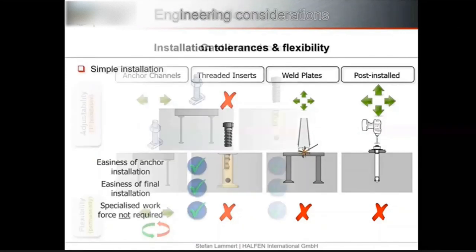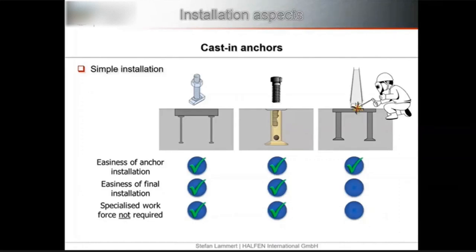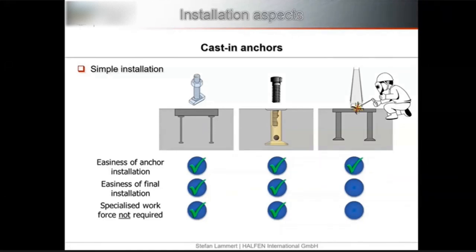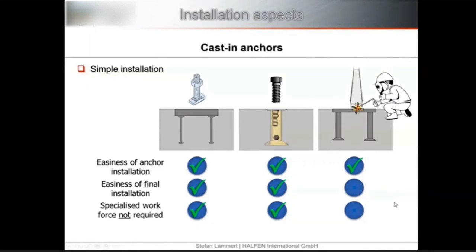Looking at installation aspects of cast-in anchors: anchor channels, threaded inserts, and weld plates are generally very easy to install. They are fixed to the formwork before the concrete pour and should be flush with the concrete surface. It is important that concrete is fully and soundly compacted around the anchor to avoid honeycombing and loss of performance. Final installation does not require specialized equipment, unlike weld plates which require qualified welders and additional quality checking efforts.